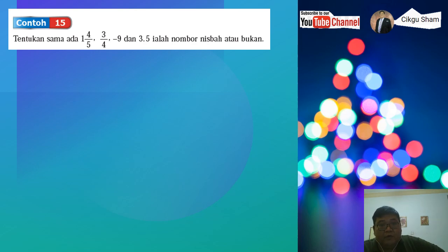Okay, kita lihat contoh 15. Tentukan sama ada 1 4/5, 3/4, negatif 9, dan 3.5, ialah nombor nisbah atau bukan. Okay, jadi 1 4/5, tukarkan dia kepada pecahan tak wajar lah, ini nombor bercampur.